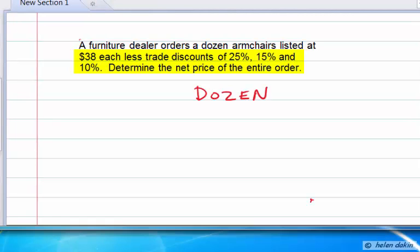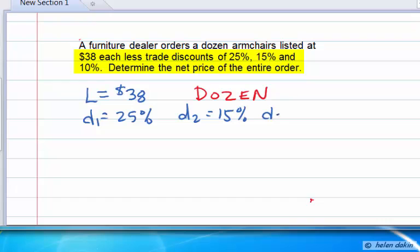First of all, we know that there are a dozen armchairs, so we're going to make a note of that. We also know that the list price, L, is $38 each. And furthermore, we have trade discounts of 25%, so discount 1 is 25%, discount 2 is 15%, and discount 3 is 10%.